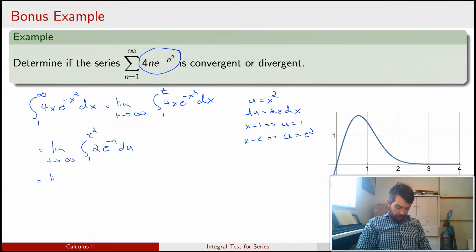And this is just the limit as t goes to infinity of—there's a minus sign because it's e to the minus u—2e to the minus u evaluated between 1 and t squared. Which is the same thing as the limit as t goes to infinity of minus 2e to the minus t squared,